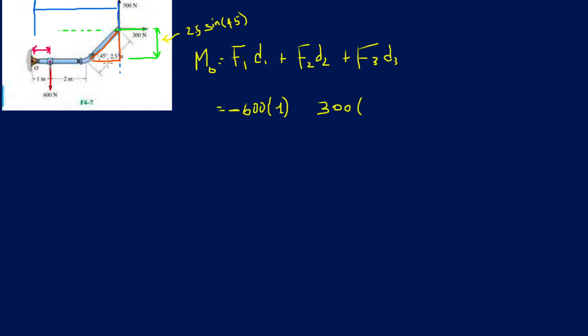So let's put it here, so 300 times the green distance, 2.5 sine 45. And which way would it rotate? Again, try to do the right-hand rule on your own. And you should see that it wants to rotate clockwise, so that'll be another negative.